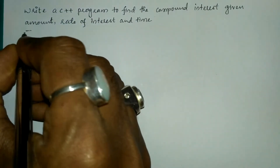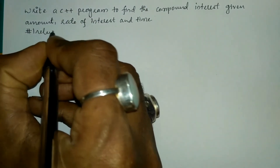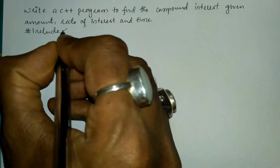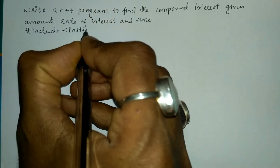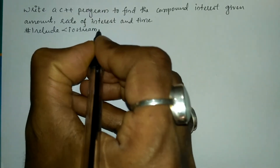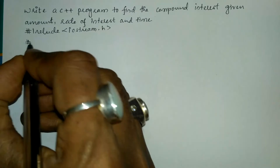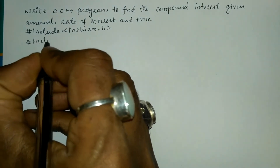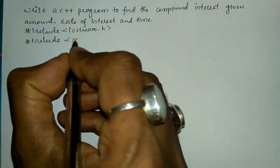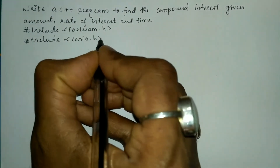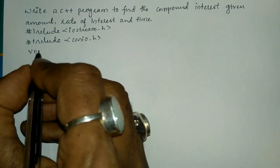Let us write the preprocessor directives: hash include in angle brackets we will write iostream.h header file, and the next preprocessor directive is hash include in angle brackets we will write conio.h header file.